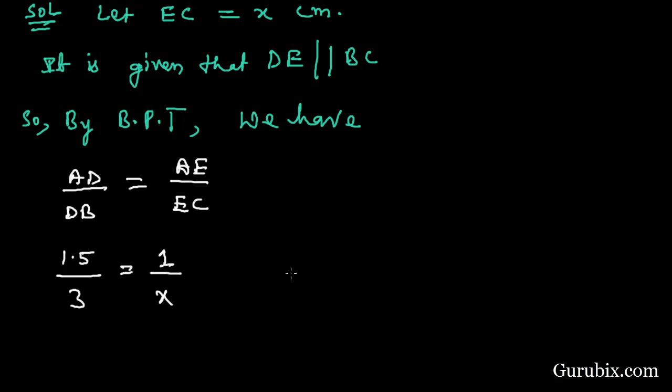Therefore, 1.5 over 3 equals 1 over x. This means x equals 2 centimeters. So this is the solution of the question. Thank you.